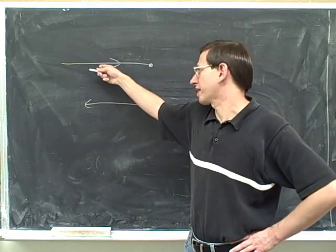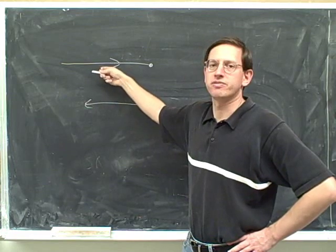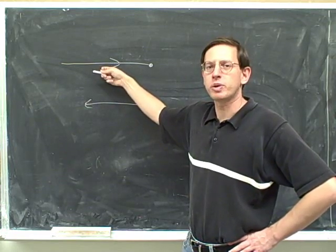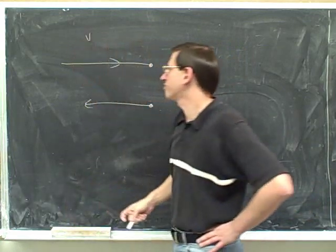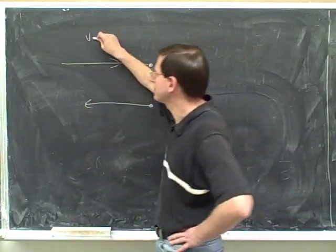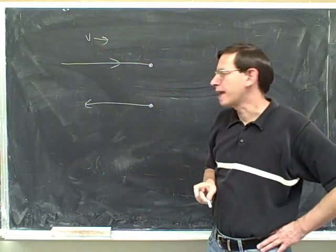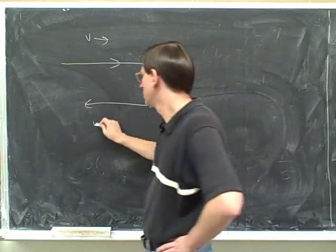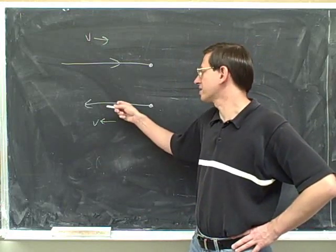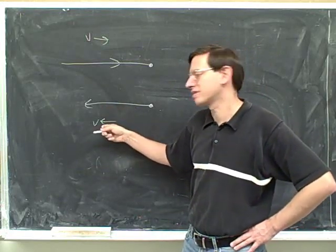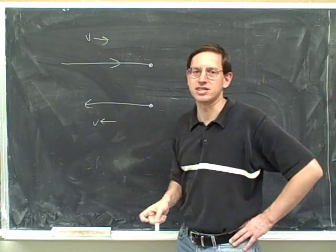Before we reverse direction, what direction is the velocity in? Clearly, before we reverse direction we're moving to the right, so the velocity is to the right. How about after we reverse direction? After we reverse direction, we're moving to the left, so the velocity is to the left.